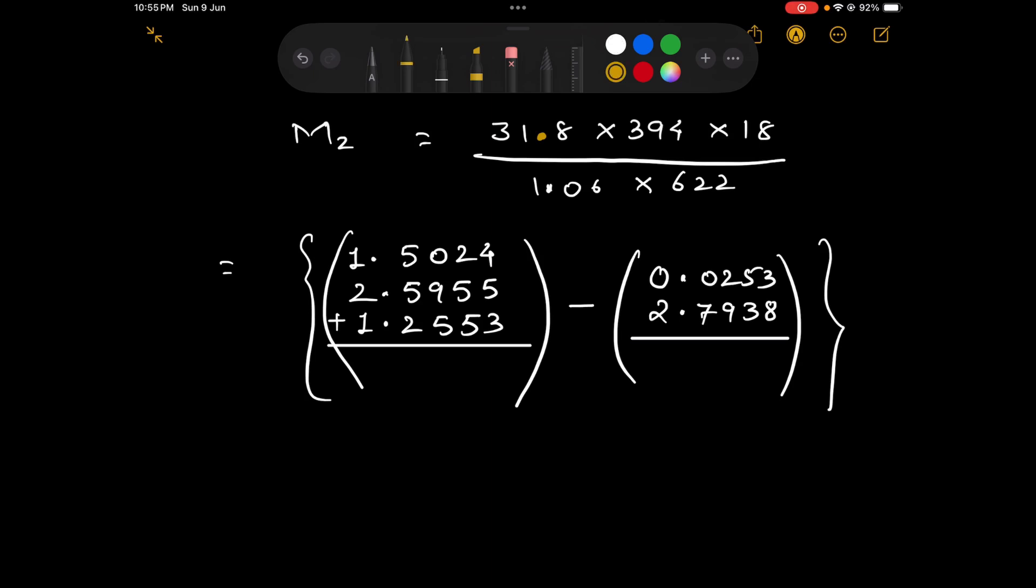So let us add: 4, 9 plus 3 is 12, carry 1, then 15, 5, carry 1, then 13. So we get it as 5.3522.